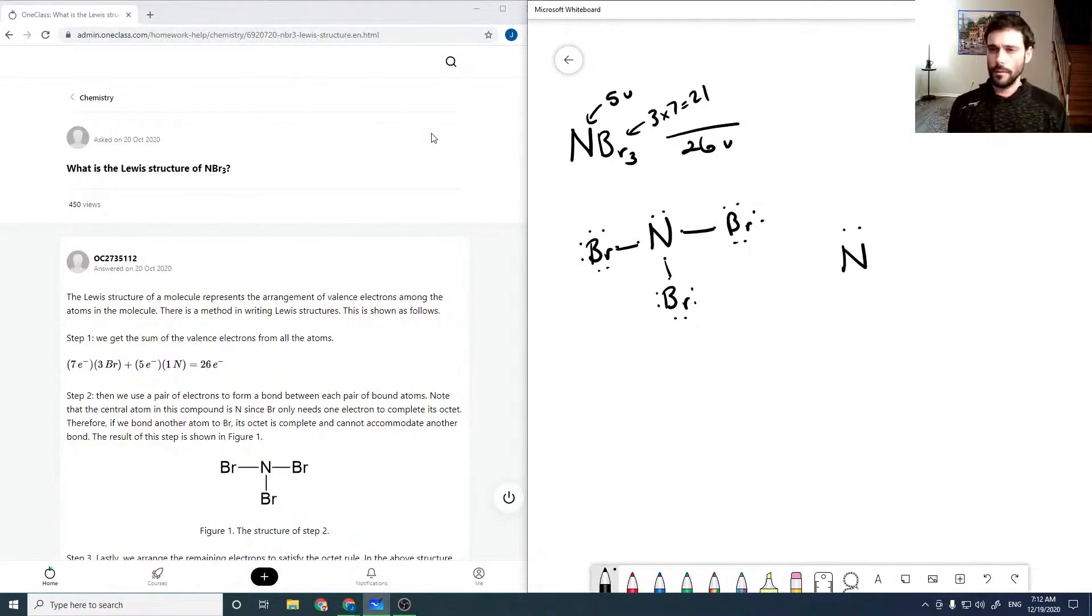And so then, this has 4 bonding partners, so it's going to be drawn in the regular tetrahedral structure. We have the lone pair going up, and so this is a trigonal pyramidal structure.